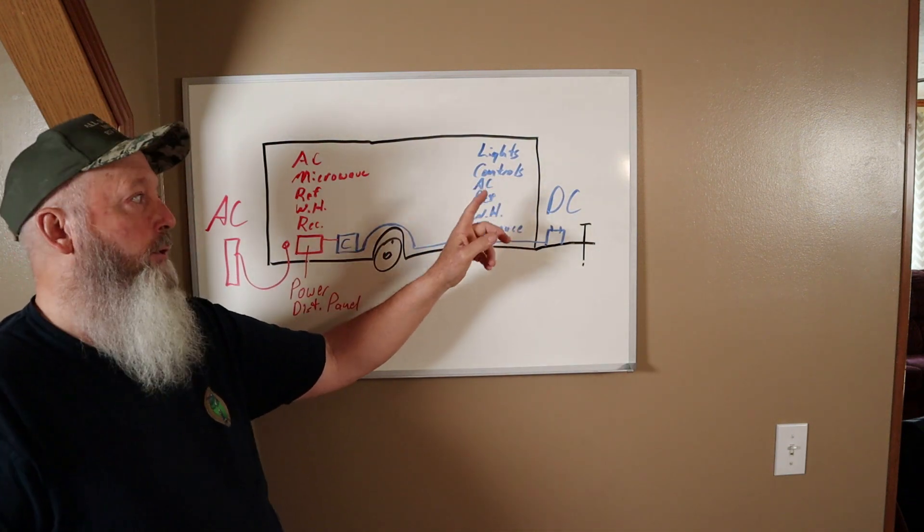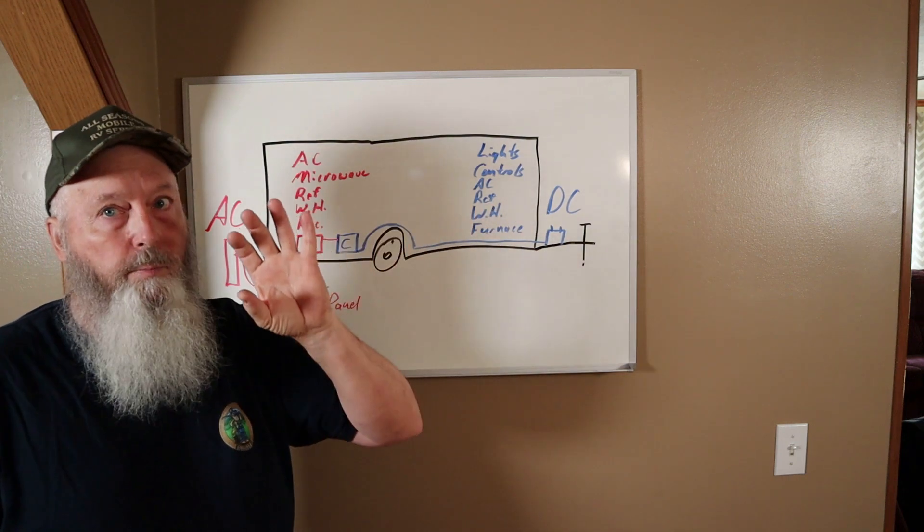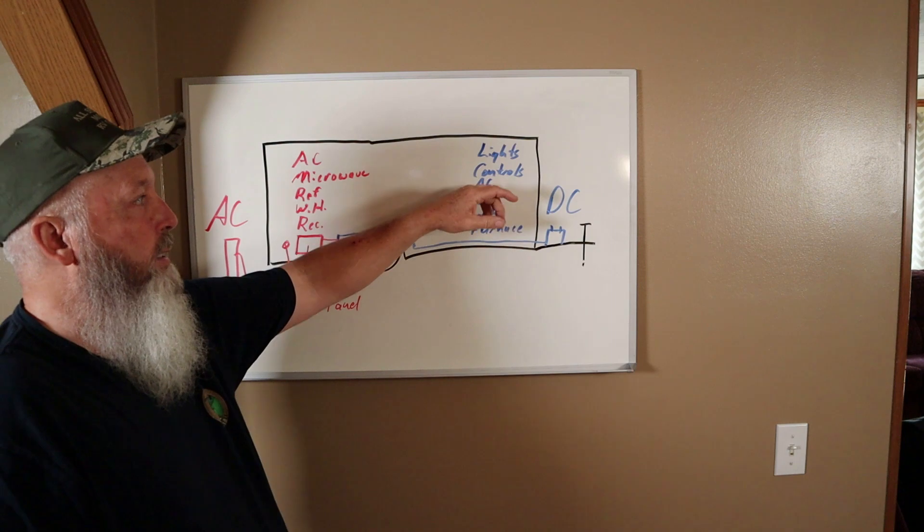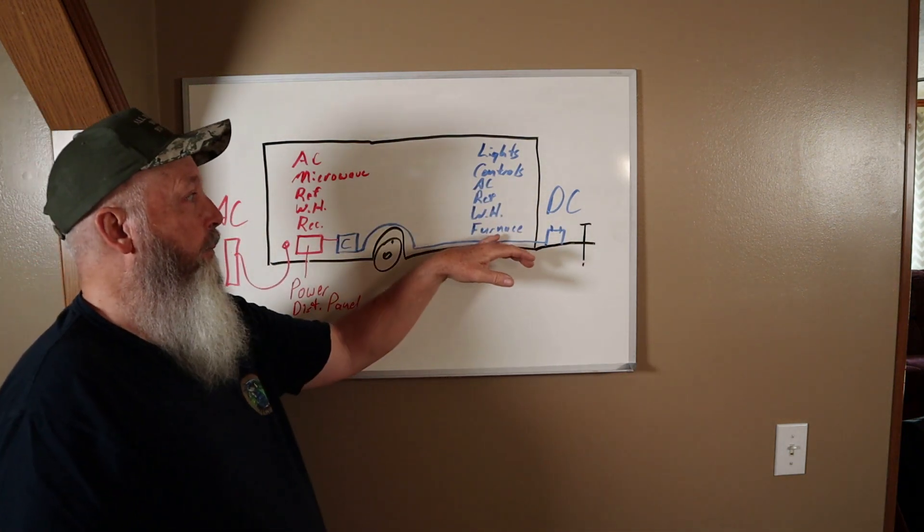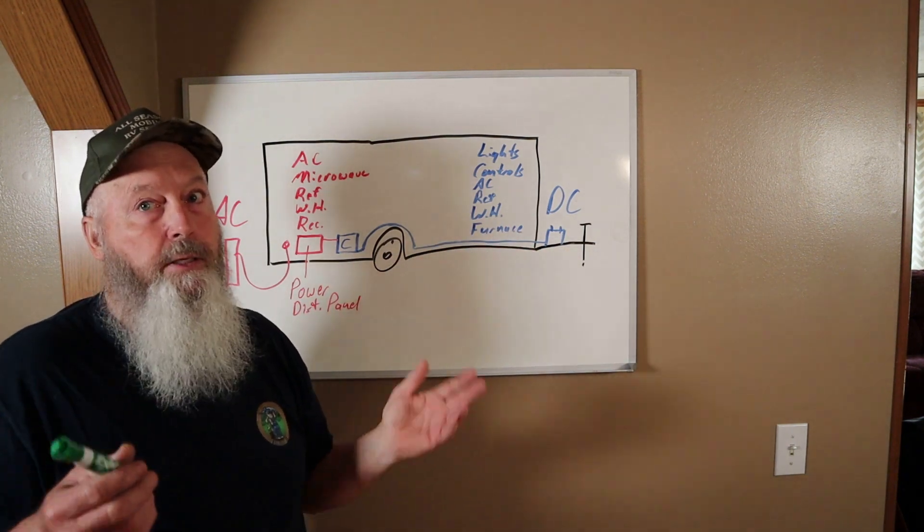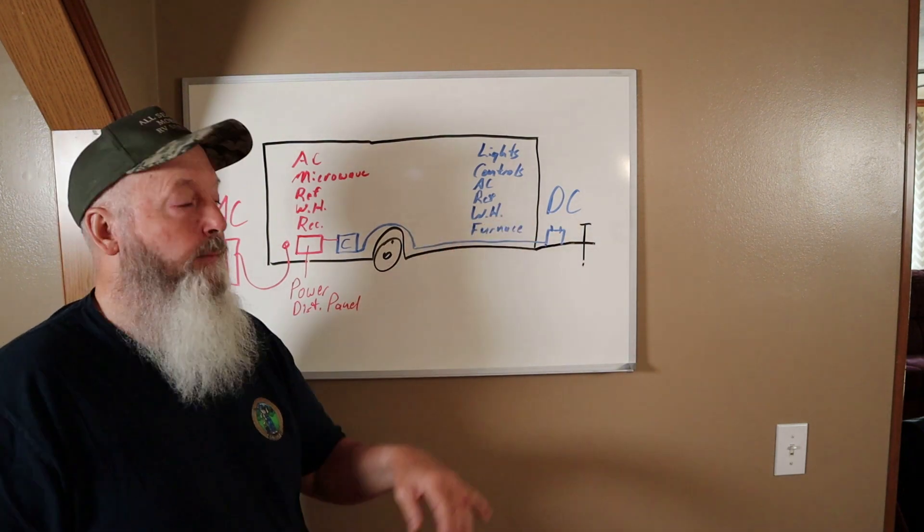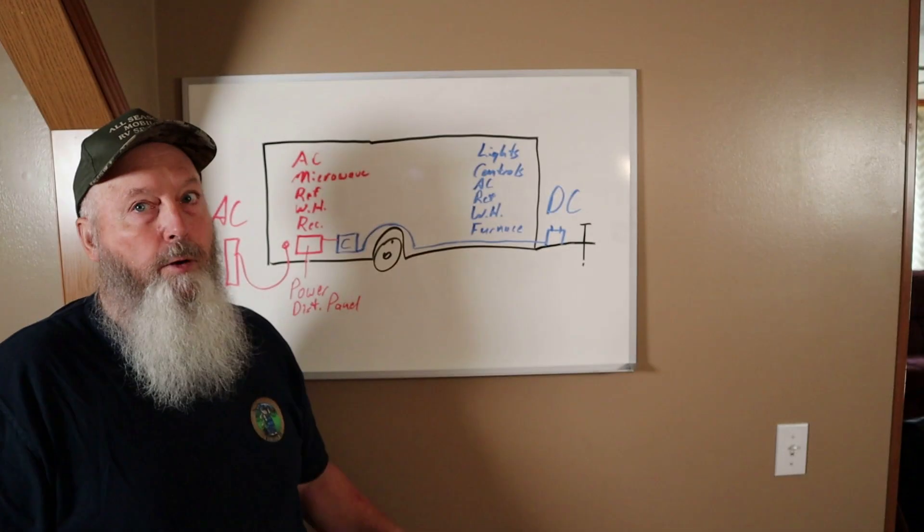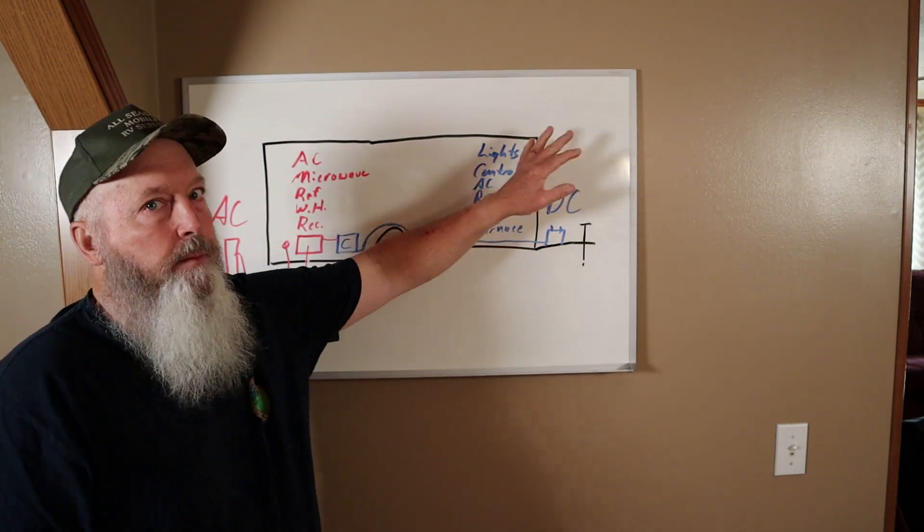Because all these things also have an AC side. And it runs your furnace. Now the furnace, it's strictly DC, so all it needs is DC power and propane and it's going to work. This is how RVs are set up for dry camping if you want to dry camp.